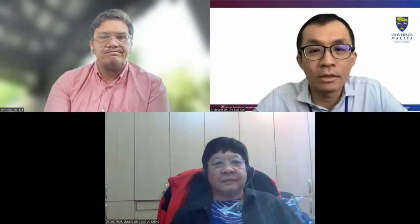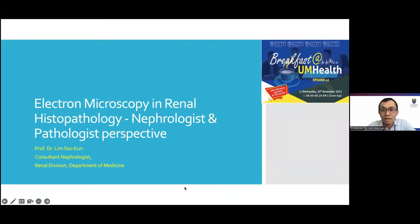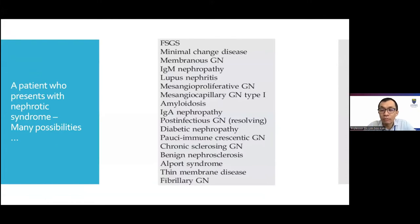Thanks Dr. Anwar for the kind introduction. Good morning everyone. My task today is just to give a quick introduction on electron microscopy in renal pathology from a nephrologist perspective. The main lecture will be by Prof. Louis later on. When a patient presents with a common nephrotic syndrome condition, there are actually many possible underlying renal pathologies, ranging from primary glomerulonephritis to secondary glomerulonephritis, amyloidosis, genetic conditions like Alport syndrome, or even fibrillary glomerulonephritis. Most can be diagnosed by light microscopy and immunofluorescence, but some may need electron microscopy to achieve a definitive diagnosis.